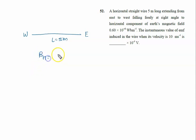The horizontal component Bh is given by 0.6 × 10^-4 weber per meter squared. Weber per meter squared is the SI unit, which is also Tesla.